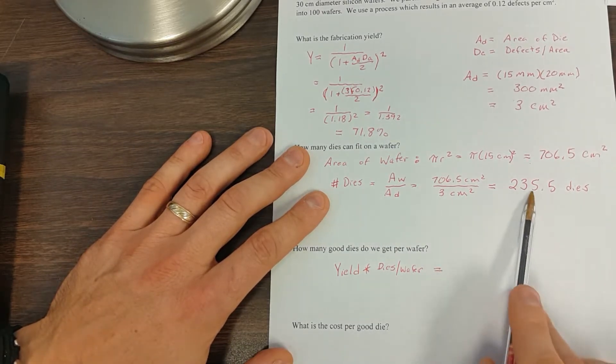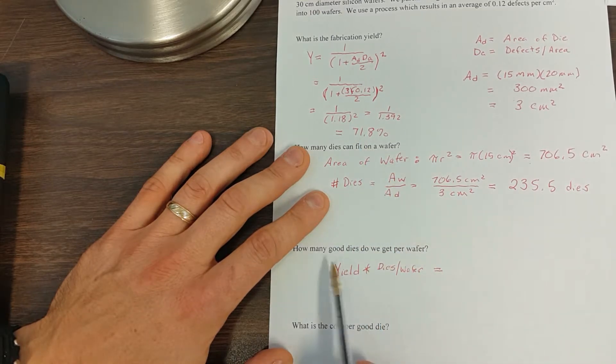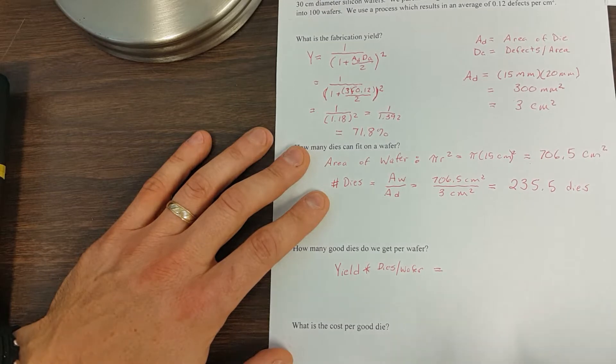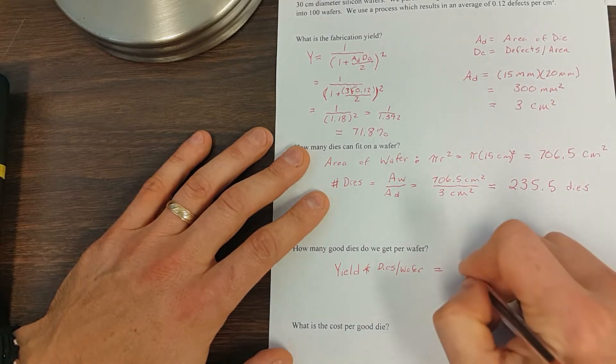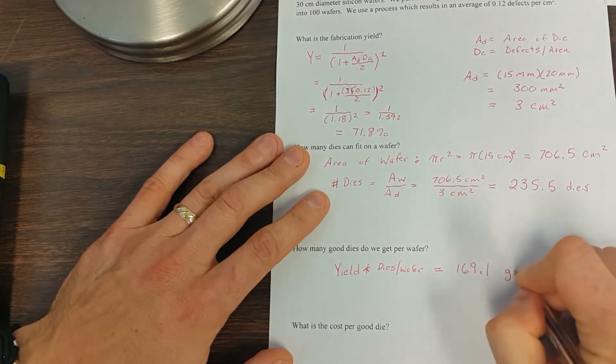Yield times the dies per wafer. And this brings up an important point. This is how many we tried to make, but we only get about 70% of them. So how many good dies do we get? Well, we get 70% of the ones that we tried to make. So how many good ones do we get out? We get 169.1 good dies.